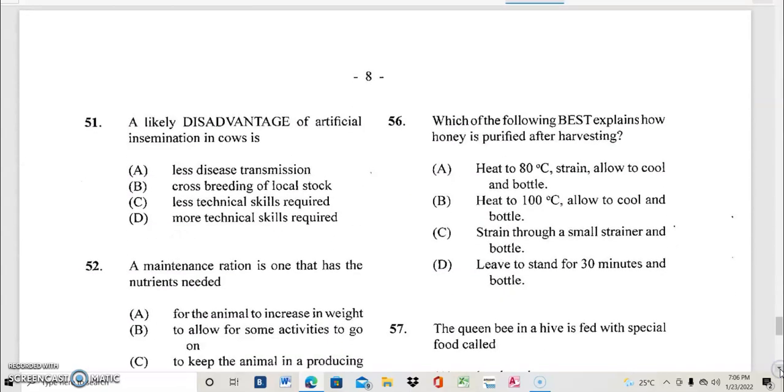Question 51. And we are going down nicely. A likely disadvantage of artificial insemination in cows is? And the answer to 51 is D, more technical skills required.